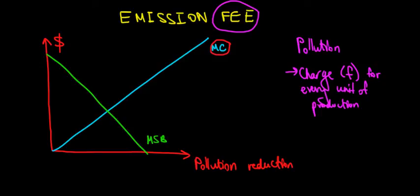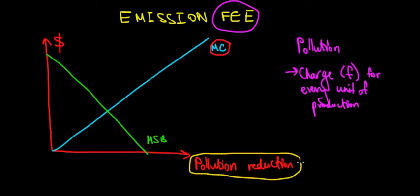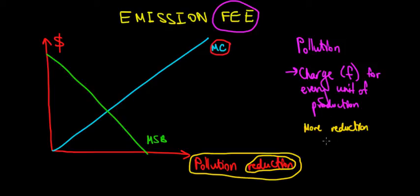What matters to understand is that the x-axis represents pollution reduction — not the level that we pollute, but the level that we reduce. That's not very intuitive to comprehend, but that's the way to do it. The more we reduce, the more it costs us. More reduction means more cost — that's the intuition.